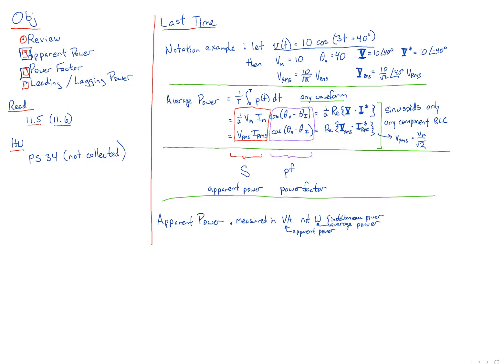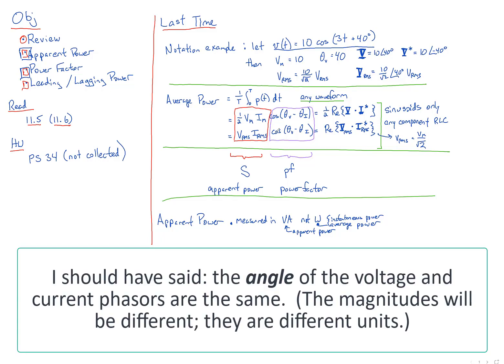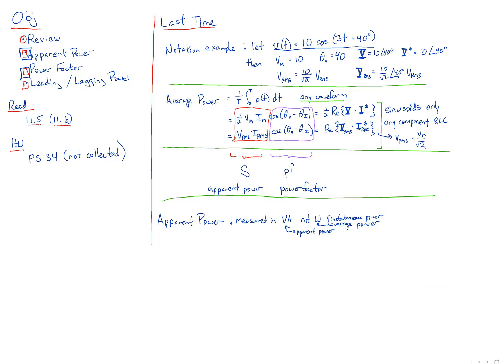This apparent power is kind of a weird thing. If we're measuring across a resistor, the difference between the voltage and current phasors is zero, so cosine of zero is one — there's no difference between apparent power and average power for a resistor. But for an inductor or capacitor, which always has zero watts average power, if we don't multiply by that zero, it does have non-zero apparent power. The definition is simply V_rms times I_rms.